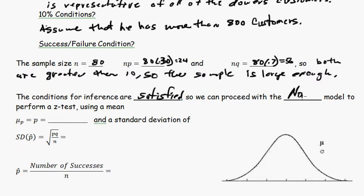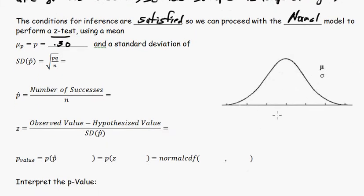So we can proceed with a normal model to perform a z-test using a mean of .30. That's our null hypothesis, .30. And our standard deviation is going to be the square root of .3 times .7 divided by 80, and that is 0.0512. That's a standard deviation. So that means that this would be about .35 right there. So mu is .30, and sigma is 0.0512.